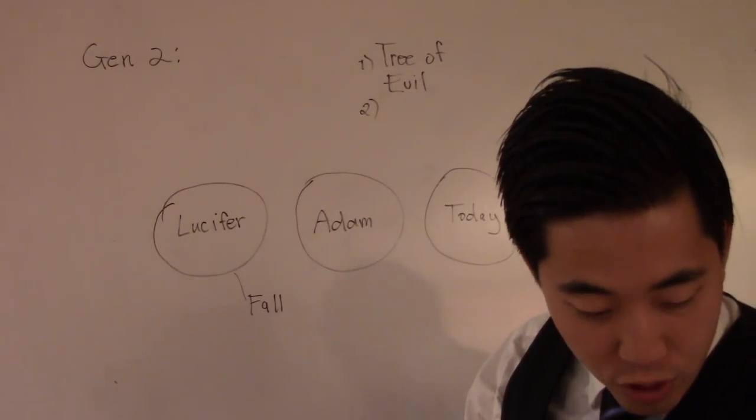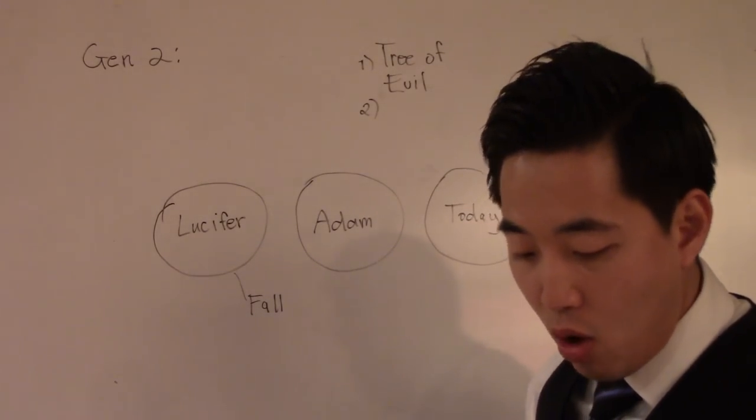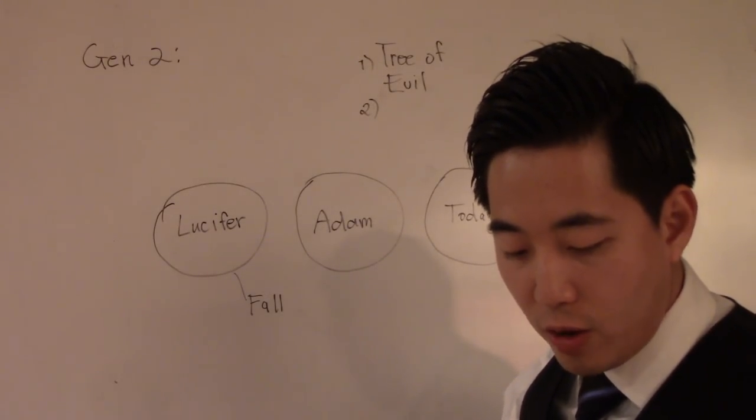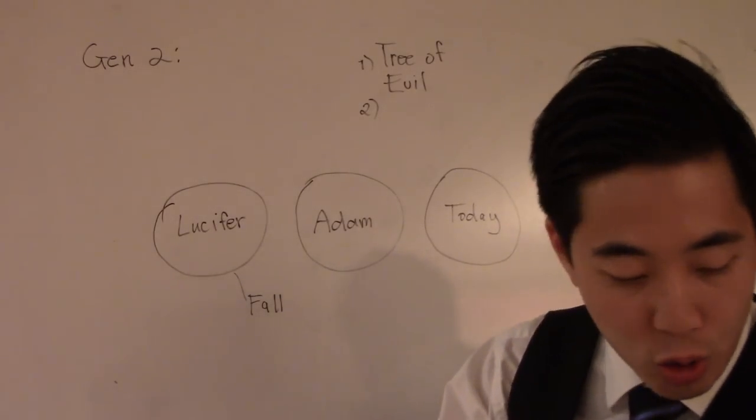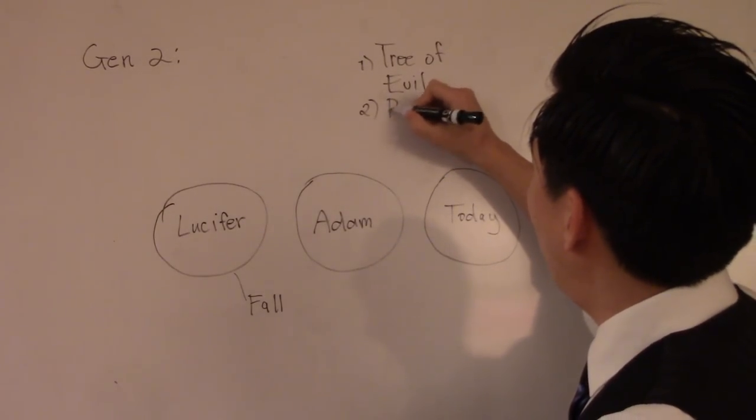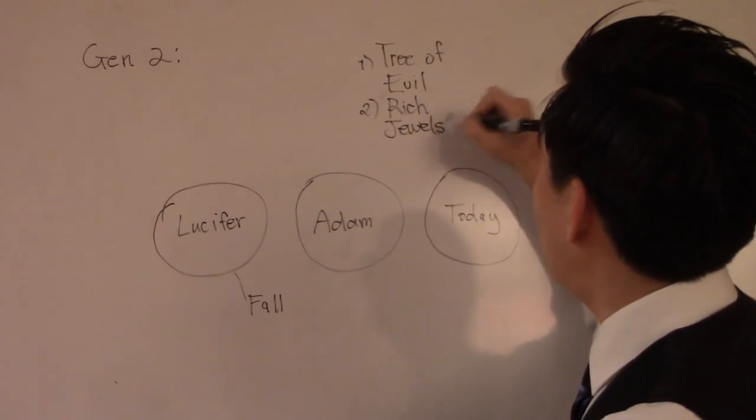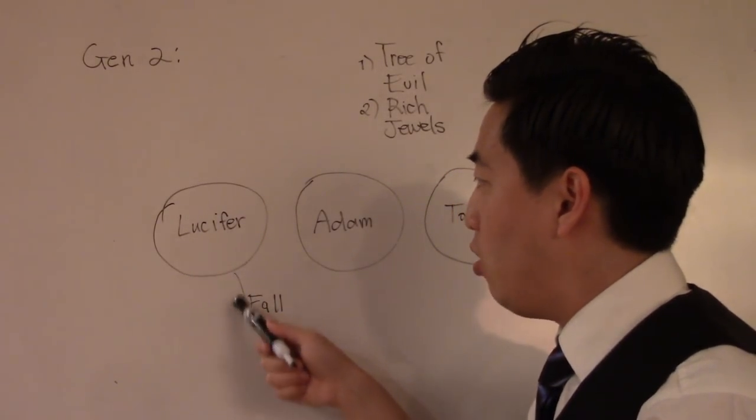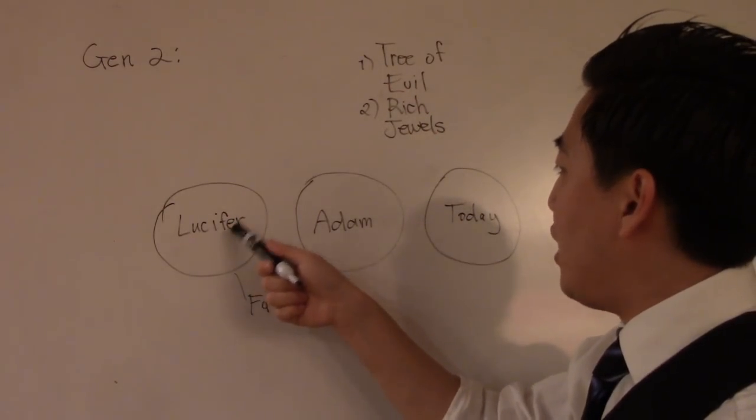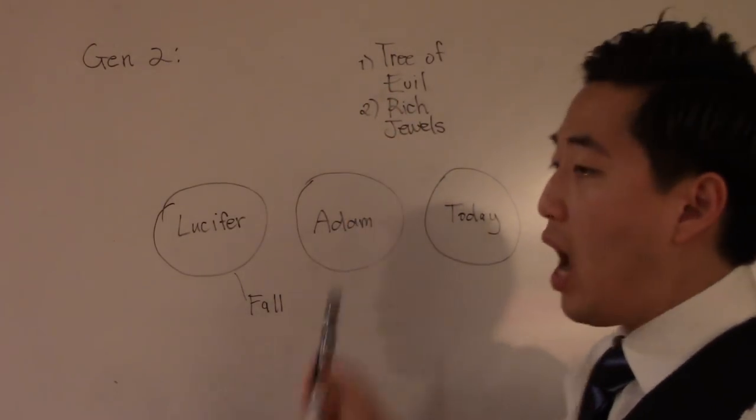Let's look at a second thing right here about the garden. Verse 9. We read in verse 11. The name of the first is Pison. That is it which compasseth the whole land of Havilah where there is what? Gold. And notice verse 12. And the gold of that land is good. There is bdellium and the onyx stone. So notice right here it's rich in gold and jewelry. Such rich minerals. You're going to see rich jewels mentioned in this garden.